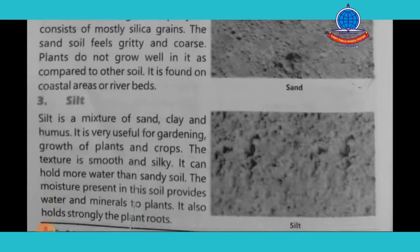Silt soil is a mixture of sand, clay and humus. It is very useful for the gardening and growth of plants and crops. The texture is smooth and silky. It can hold more water than sandy soil. The moisture present in this soil provides water and minerals to plants, and it also holds the plant's roots strongly.